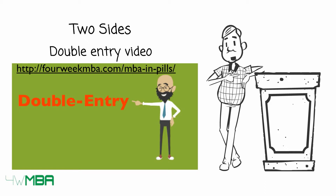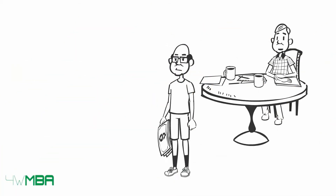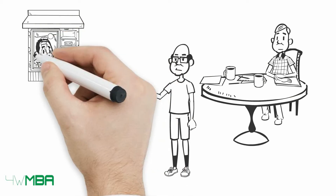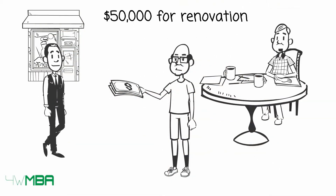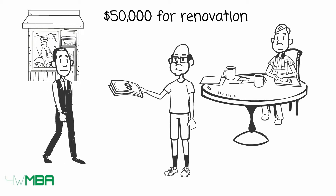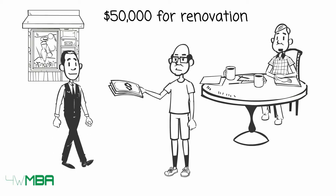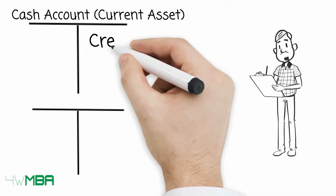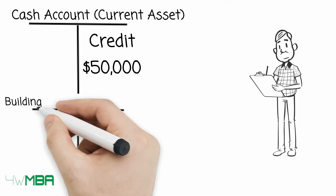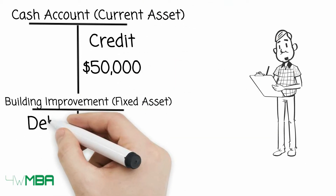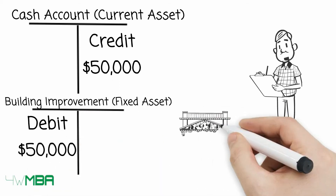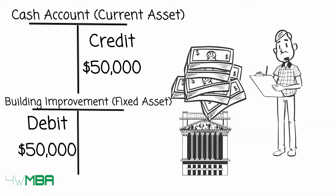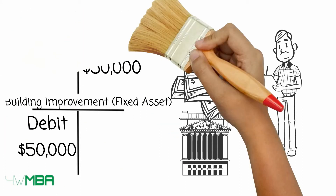Let's see some other journal entry cases. Jim had to pay $50,000 cash to renovate the store. Any idea of how to record the transaction? Let's see it together: credit the cash account, then debit the building improvement account. Indeed, a building renovation will increase the value of the building, so it will show as a fixed asset.